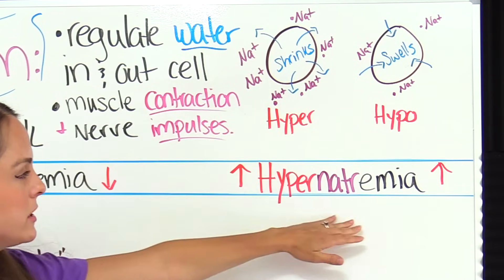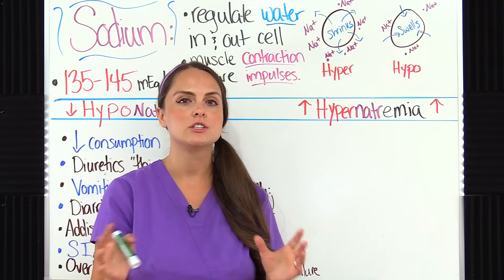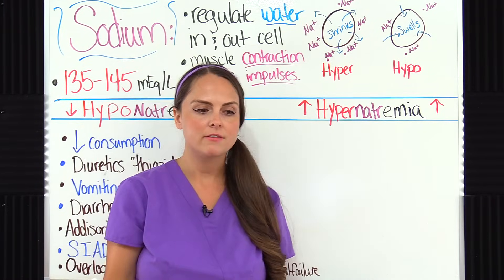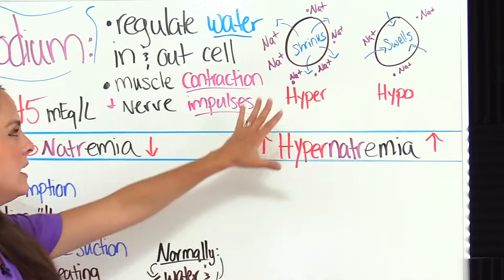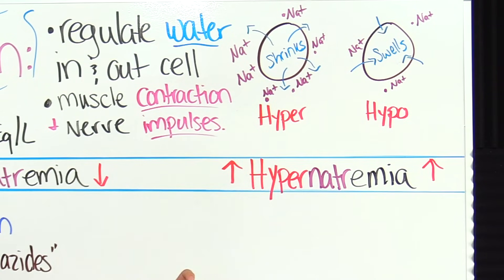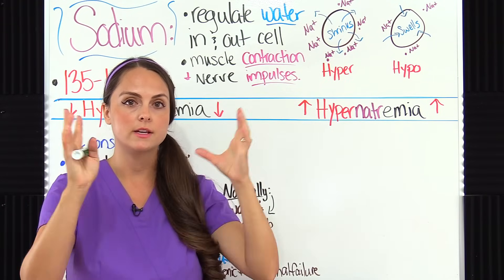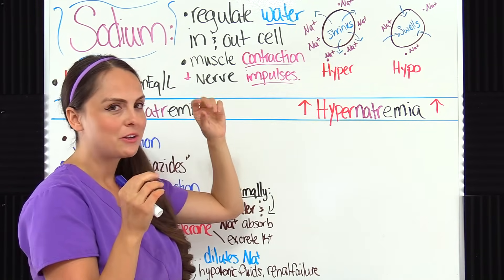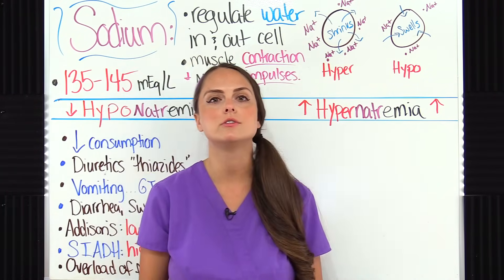The higher or lower the number is from that range, the more profound the signs and symptoms will be. In hypernatremia, there's a lot of sodium in the blood — and water loves sodium, so wherever there's a higher concentration of sodium, water will be pulled there. Like when you eat salty foods and crave water. So with lots of sodium in the blood, water that's in the cell gets pulled outside, causing the cell to shrink. In hyponatremia, there's low sodium in the extracellular part, so water gets pulled inside the cell, causing the cell to swell.